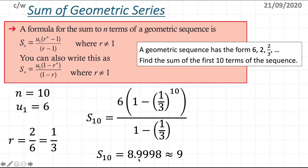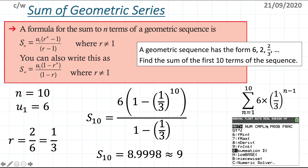Plugging into the formula using the second form with r = 1/3 to the power of 10 gives approximately 8.9998, which is approximately 9. Make sure to show it's an approximation. Using sigma notation, this is the sum from n = 1 to 10, and you can verify with the calculator by entering 6 times (1/3) to the power of (x minus 1).